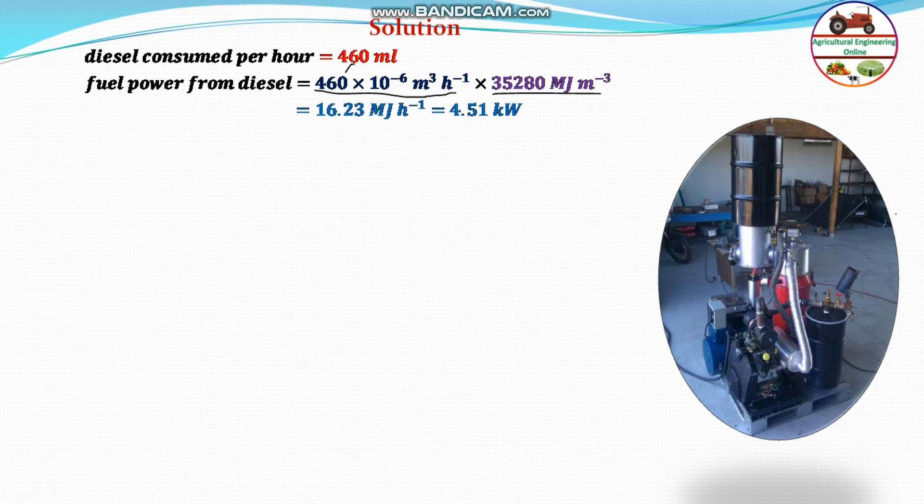Multiplying, you can find out the total energy by diesel given to the engine is 16.23 MJ per hour. If you convert megajoules per hour, that is 16.23 divided by 3.6, you get kilowatts. So 4.51 kilowatt is the power input by the diesel fuel only.